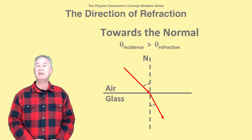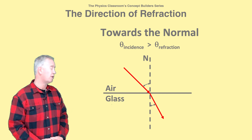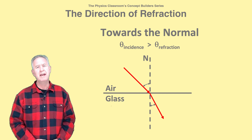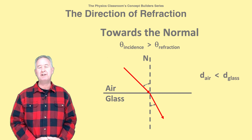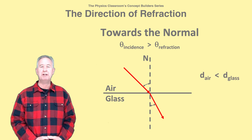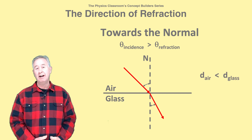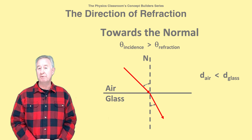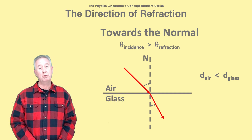That is, the incident ray is further from the normal line than the refracted ray is. When does this happen? It happens when light passes from a less optically dense medium to a more optically dense medium. Optical density is directly related to the index of refraction value and inversely related to the speed of light.